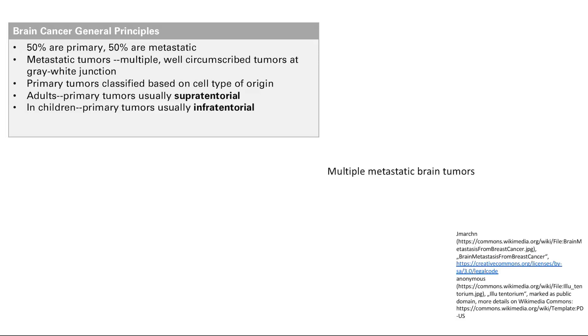Brain tumors. These are what happens when your brain cells go crazy, and that's a primary brain tumor. 50% of tumors in the brain are primary, and 50% are metastatic from other parts of the body.